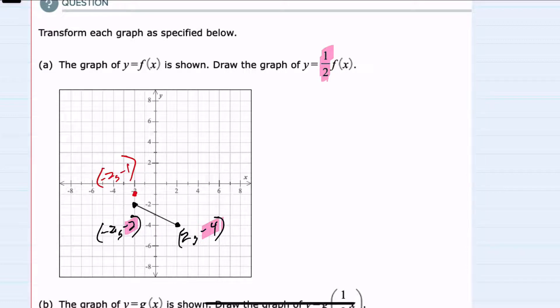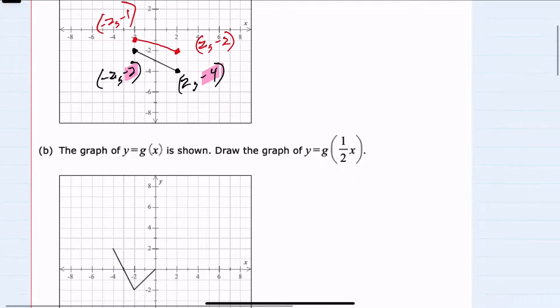And then the same for the point on the right. When I put a 2 into the function, I'm going to take half of the output, so half of negative 4 is negative 2, so this point is 2, negative 2. So our new graph can be drawn by just connecting those two dots. We can see that the one half has shrunk the y values.